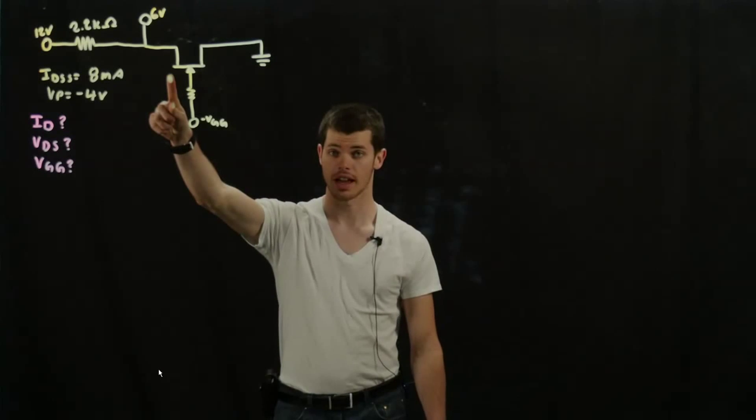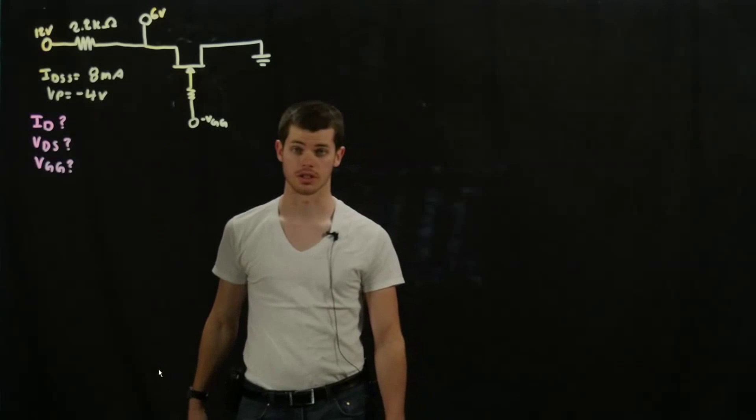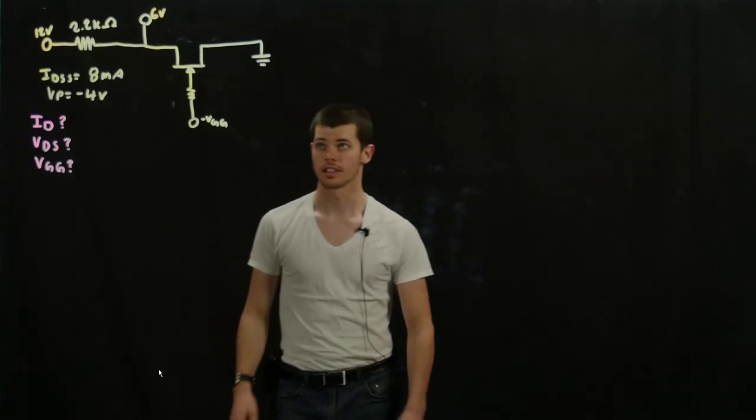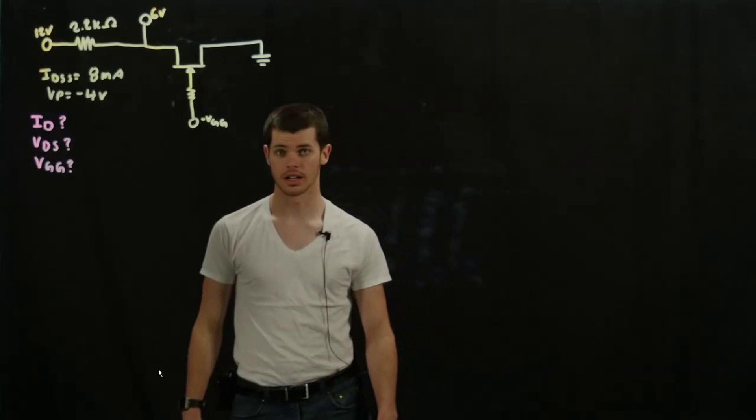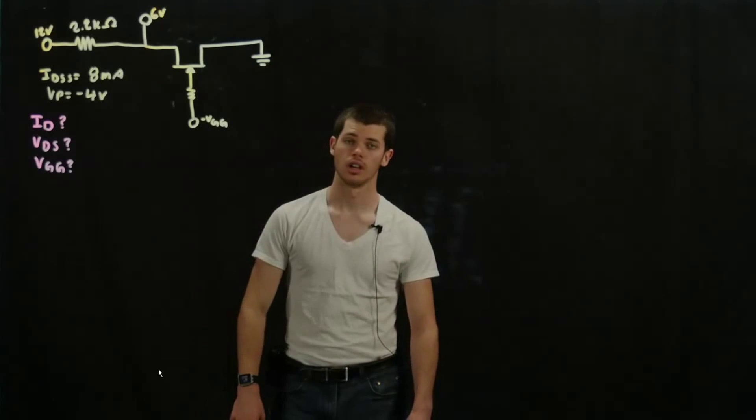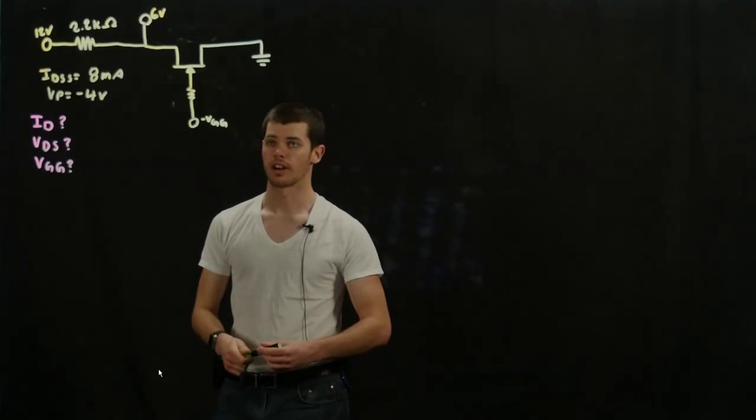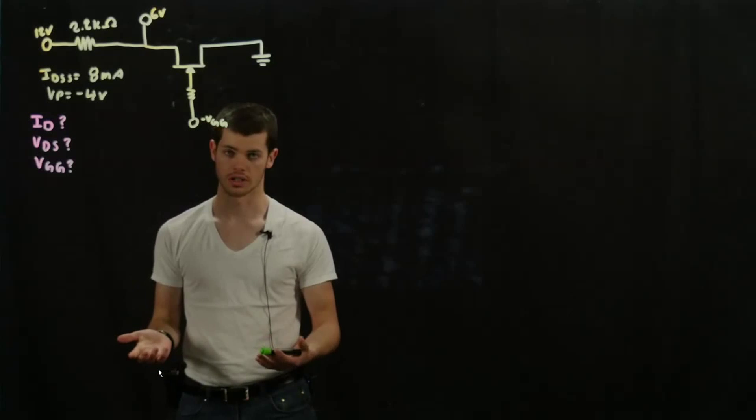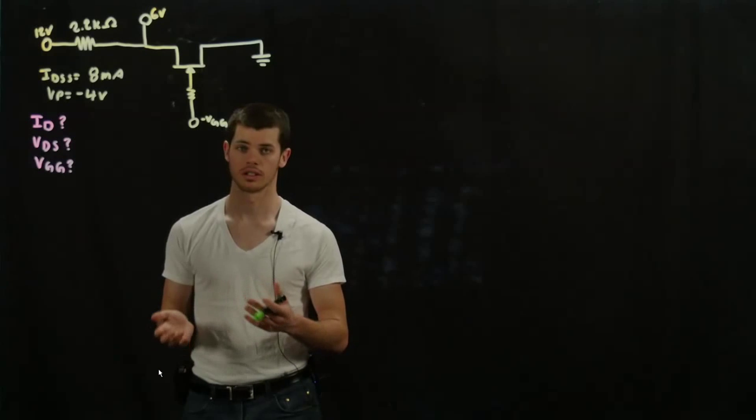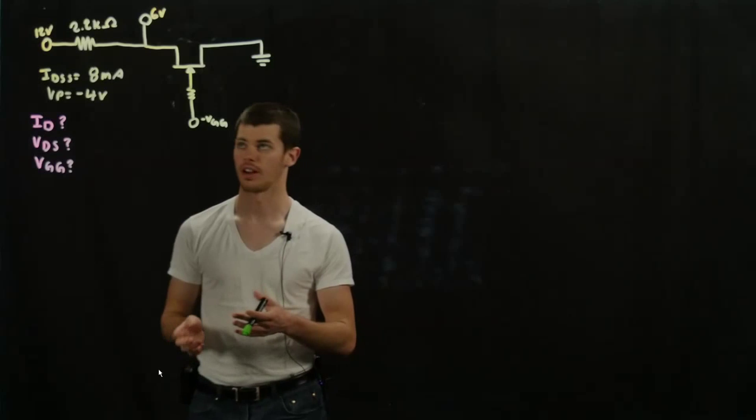The biggest difference between this and a BJT, which the class usually focuses on for the beginning half, is that this is voltage controlled while a BJT is current controlled. So in terms of calculating, the important value here would be VGS, which essentially is the beta value, so it manipulates how the FET performs.